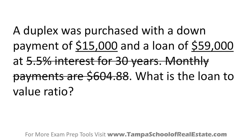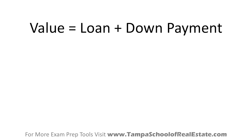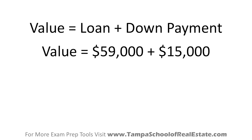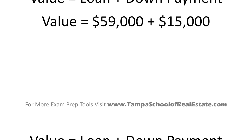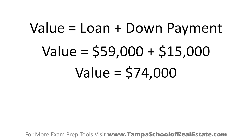To figure out the value of a property, you can take your loan amount — in this case $59,000 — and add it to the down payment of $15,000. So we take our loan amount of $59,000, add that to our down payment of $15,000, and that gives us a total value of $74,000. So $74,000 is our total value of this property.